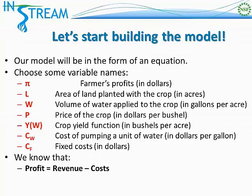We're going to represent the volume of water applied to the crop by the farmer with W. The price of the crop in the market — the price at which the farmer can sell this crop — with a variable named P. We're going to have a crop yield function Y of W, which takes as an input the volume of water applied to the crop. As you would expect, as you increase the volume of water applied to a crop, your crop yield will also increase.